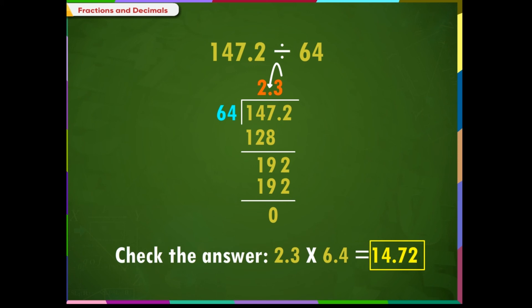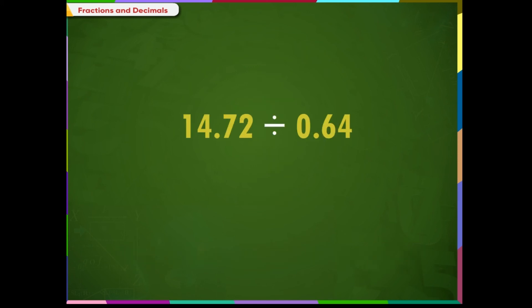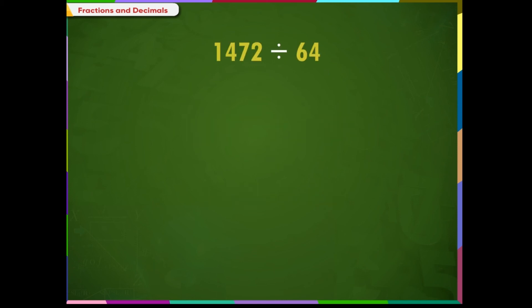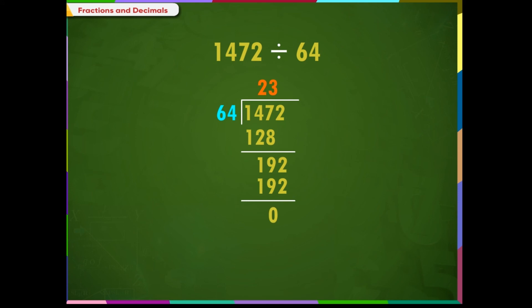Let us consider one more example. Divide 14.72 by 0.64. Move the decimal point in the divisor all the way to the right to make it a whole number. Move the decimal point in the dividend the same number of places. Divide the numbers by the long division method. Since the dividend does not have a decimal point, the quotient will not have a decimal point either.